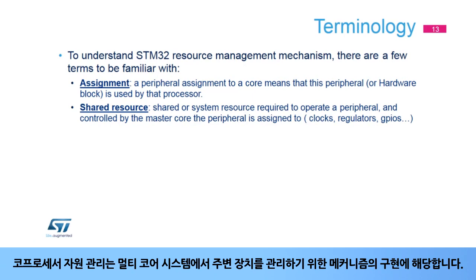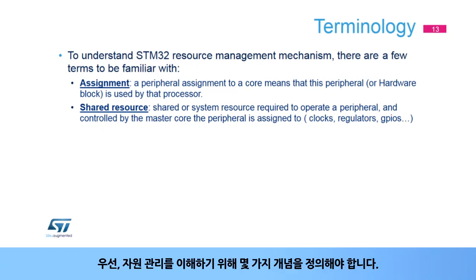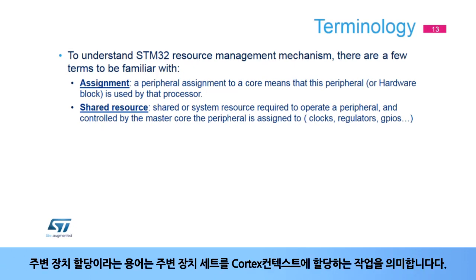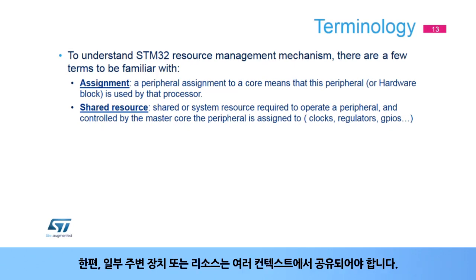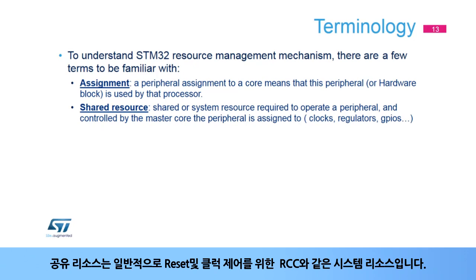The coprocessor resources management corresponds to the implementation of a mechanism for the management of the peripherals in a multi-core system. First of all, some concepts have to be defined. The term peripheral assignment means the action to assign a set of peripherals to a Cortex context. For instance, an I2C peripheral can be assigned to either the Cortex-A7 or the Cortex-M4 core. At the opposite, some peripherals or resources must be shared across several contexts. The shared resources are typically system resources, like RCC for the reset and clock control.